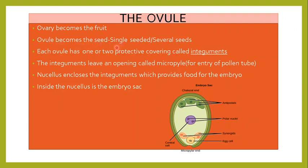There can be single-seeded fruits or several-seeded fruits. Single-seeded fruits had only one ovule, and fruits with several seeds had several ovules inside them. Each ovule has one or two protective coverings known as integuments. As you can see in the diagram, this dark green portion is the integuments — the outer covering of the ovule.